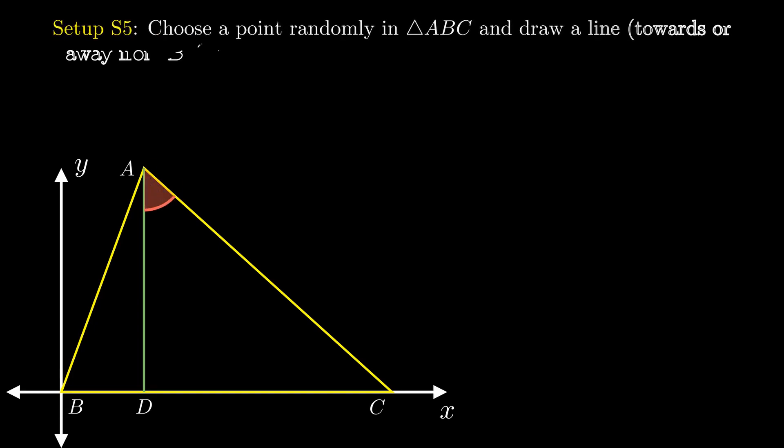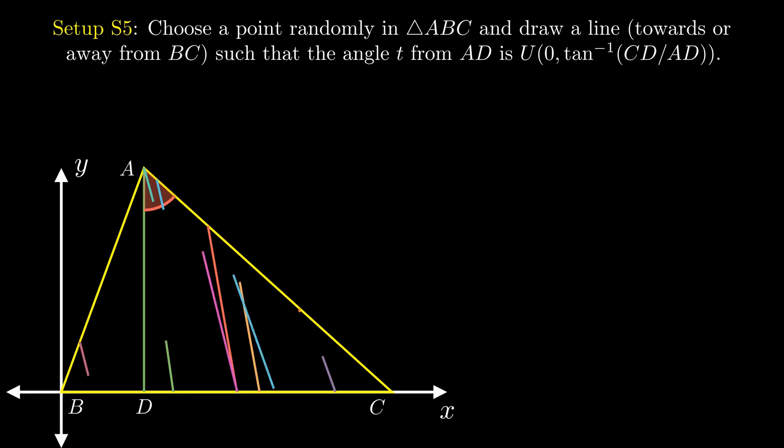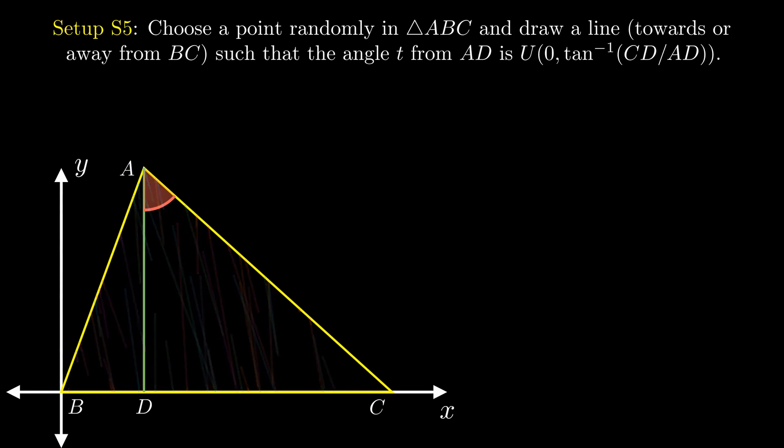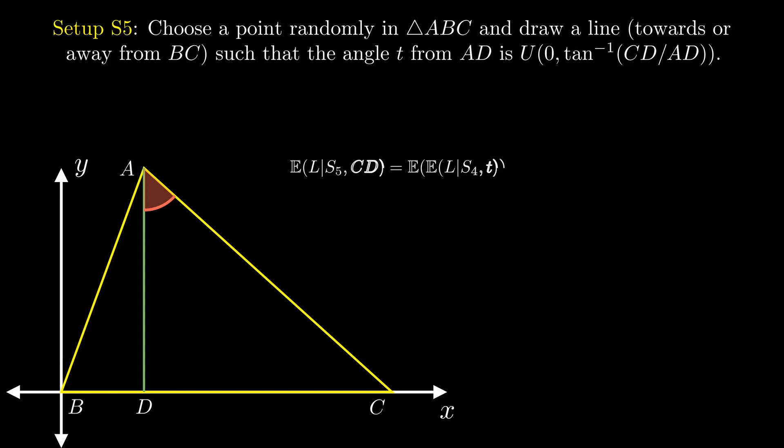For our fifth setup, we choose a point randomly and draw a line such that the angle T between this line and the altitude AD is uniformly distributed in the interval between 0 to tan inverse of CD by AD. The expected value in this case is 1 by tan inverse of CD by AD times the integral of Hₐ by 3 cost T over the given interval.